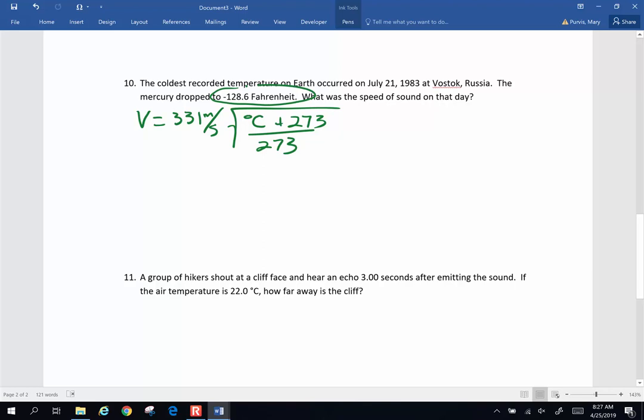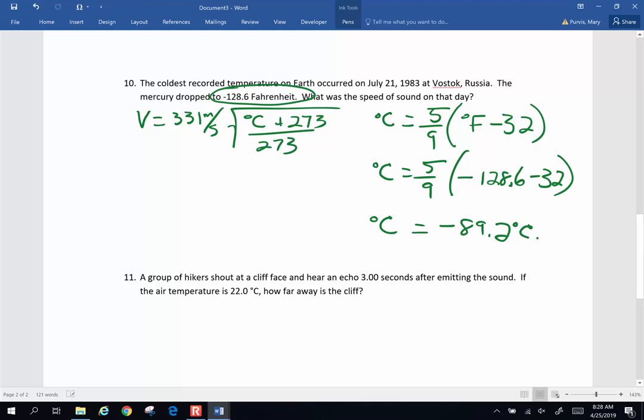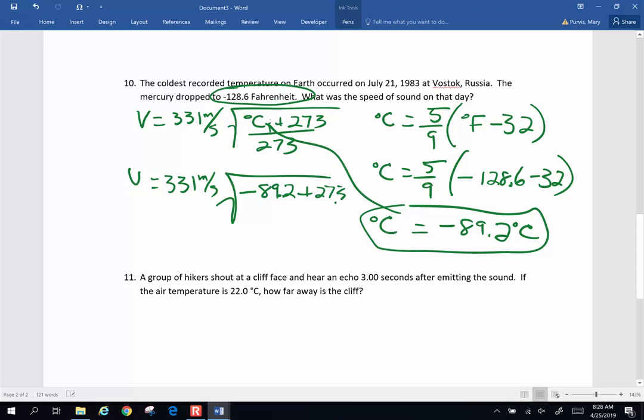So degrees Celsius is equal to 5 ninths times degrees Fahrenheit minus 32. So degrees Celsius will be 5 ninths times minus 128.6 minus 32. Really cold is the answer. Or minus 89.2 degrees Celsius. In Wisconsin, I guess we don't have it that bad. That goes up there, 331 meters per second times the square root of minus 89.2 plus 273 divided by 273. And remember order of operations. Add and subtract, then divide, then square root, then multiply. And I end up with a velocity of sound of 272 meters per second.